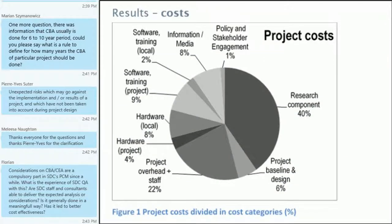The project costs show a big share attributable to the research component. This project had an innovative character, so they had to innovate the approach and apply it in a very specific way. Then we have the implementation costs and the local costs. Costs before the campaign were quite high because of research and development costs. During implementation costs are also high because it's an international organization implementing a project. But after the campaign, to keep the activities ongoing, you have a much lower level of expenses required.